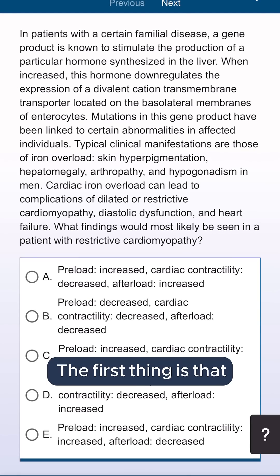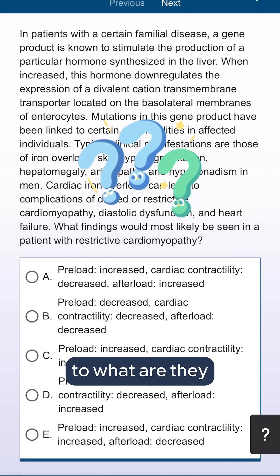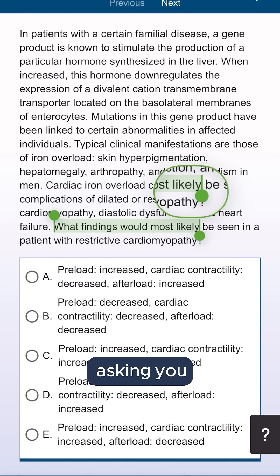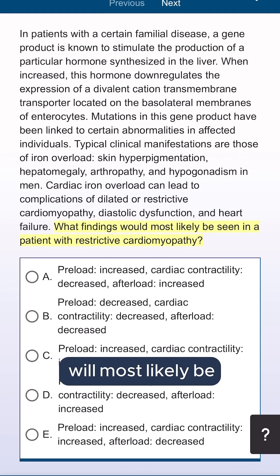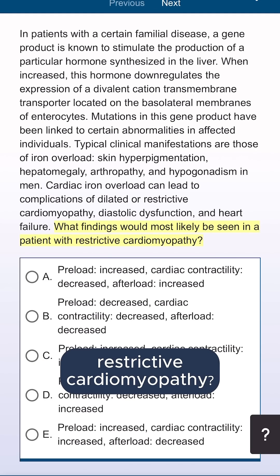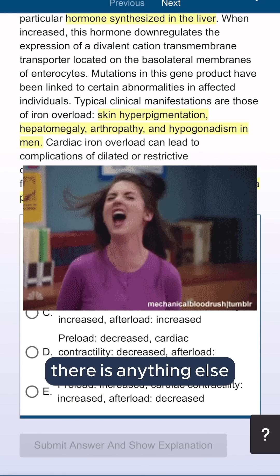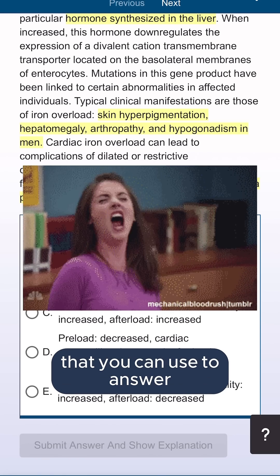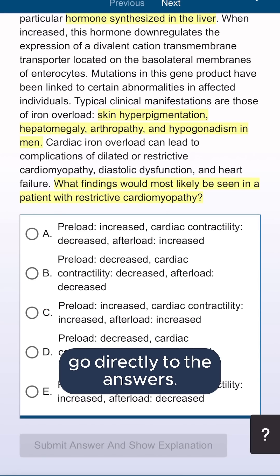The first thing is that you always have to look forward first to what are they asking you. Here the question is: what findings will most likely be seen in a patient with restrictive cardiomyopathy? After reading the complete case, you realize there is nothing else you can use to answer the question, so we are going to go directly to the answers.